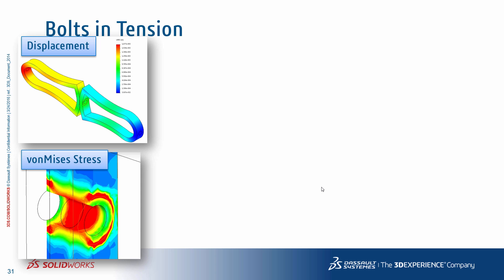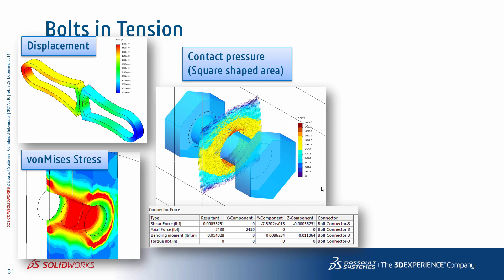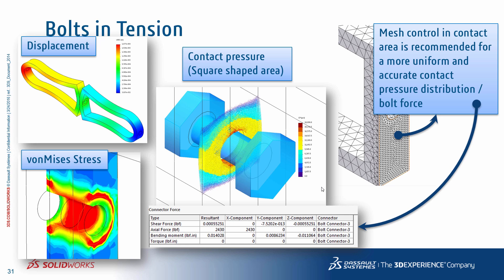When that 2430-pound preload is applied to the system, the stress and displacement results show reasonable behavior. The system deforms as expected, and a contact pressure plot shows a square-shaped contact area with higher contact pressure toward the center of the bolt — exactly what we'd expect. The bolt connection forces confirm the axial force in the bolt matches the preload of about 2430 pounds. Note that mesh control in the contact area helps achieve a more uniform and accurate contact pressure distribution.